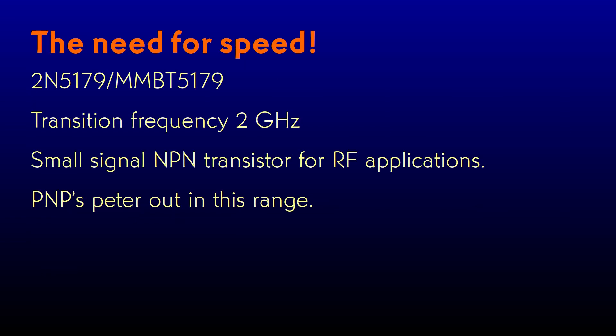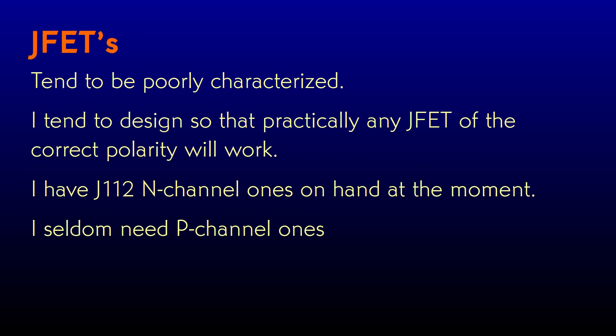Once in a great while, I build something that needs to work at radio frequency. The 2N5179 NPN is a classic for that — its transition frequency is up in the gigahertz. It doesn't have a great PNP counterpart; PNPs struggle to keep up in high-performance applications. I also keep a handful of JFETs on hand, both as fast switches and as low-leakage diodes. JFETs' performance numbers tend to be all over the map — it's hard for the manufacturers to make predictable ones. In most of my circuits that use JFETs, any old N-channel JFET will probably work. I seldom need P-channel ones.